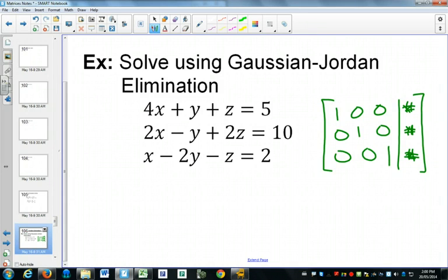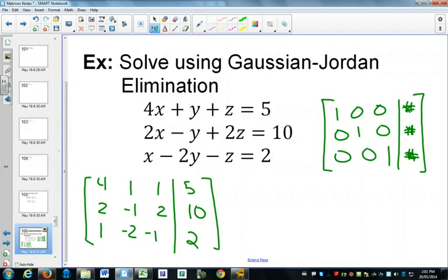Right now, we have 4, 1, 1, 5; 2, negative 1, 2, and 10; and 1, negative 2, 1, negative 1, and 2. Every time you write out something, you should just do a double check that you didn't change numbers along the way.